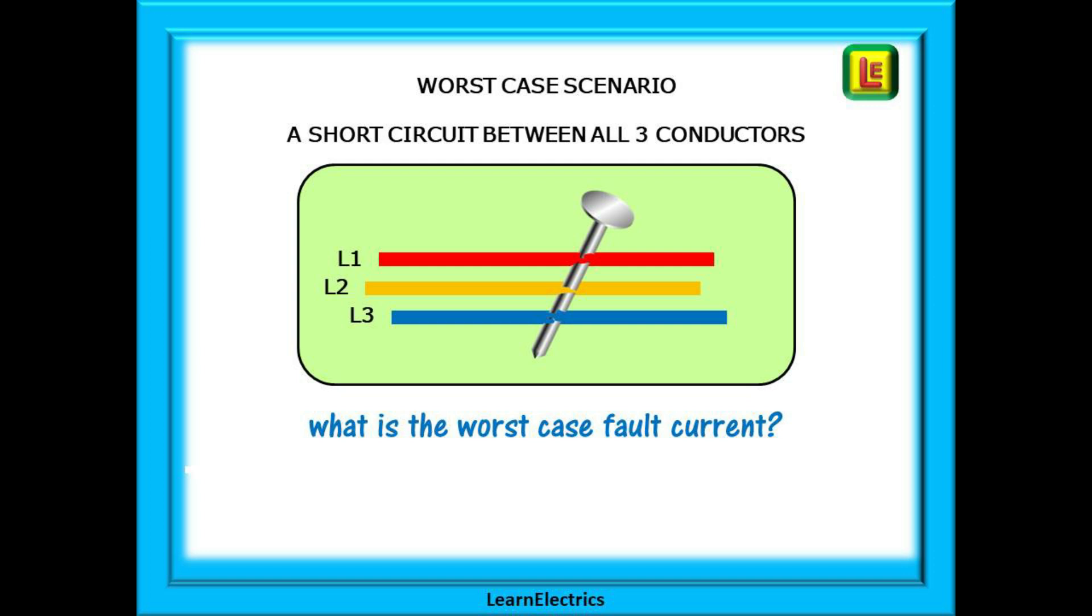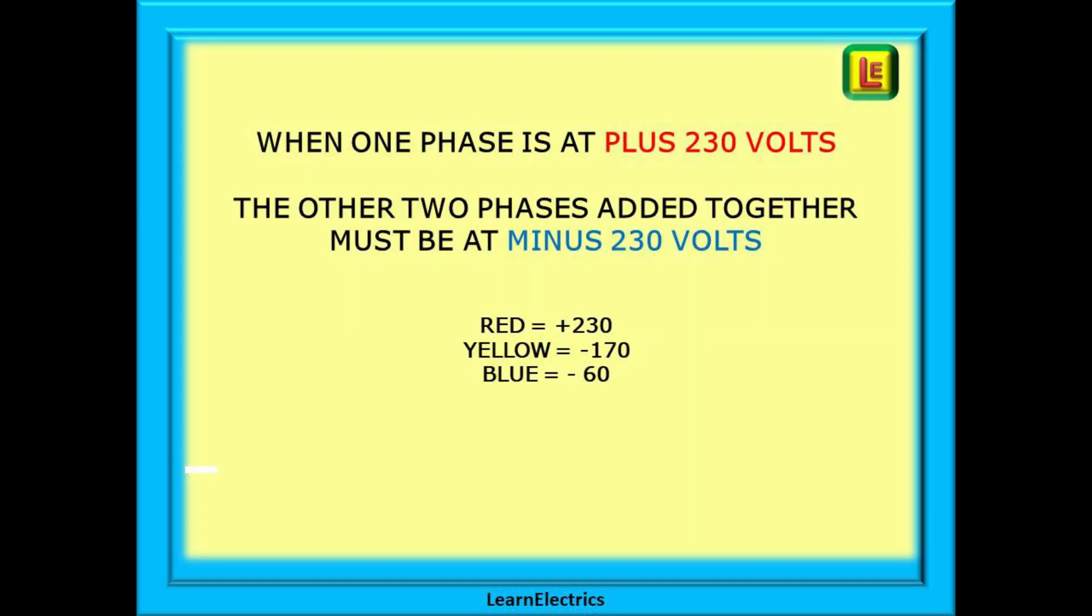Perhaps a nail between L1, L2 and L3 as shown here. What is the worst case fault current that can flow? We said before that when one phase is at plus 230 volts, then the other two phases must add up to minus 230 volts. In this example, red is at plus 230, yellow is at minus 170 and blue sits at minus 60.